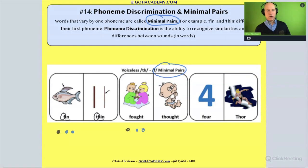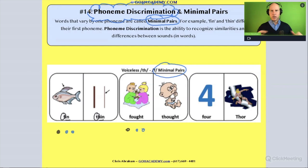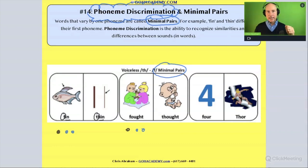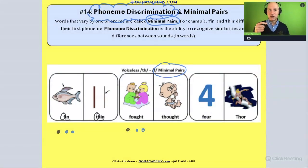Minimal pairs are helpful for students who are really beginning with early phonological awareness. They help the student distinguish — to tell if a word is the same or different. Phoneme discrimination is the ability to hear if sounds are the same or different.